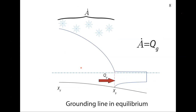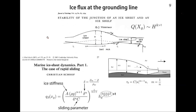I want to make a distinction: equilibrium does not mean steady state. Obviously when the ice sheet is in steady state, the two fluxes balance each other. But if the accumulation changes with time, and the flux through the grounding line adjusts itself to balance that accumulation, the grounding line is in equilibrium even though the whole system is not in steady state. So it would be really good to know what that flux at the grounding line is.